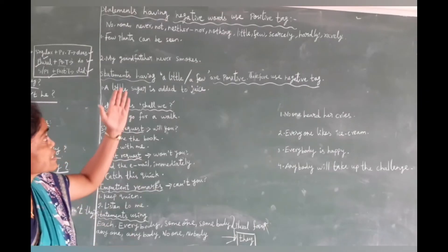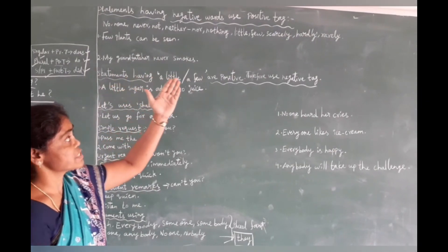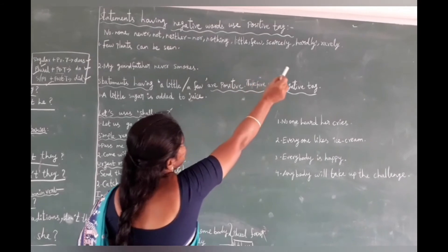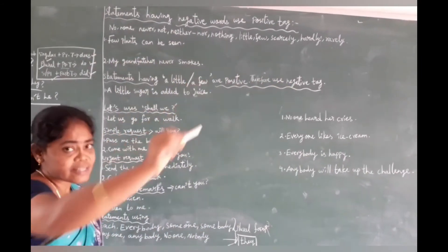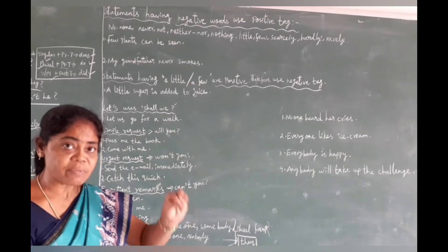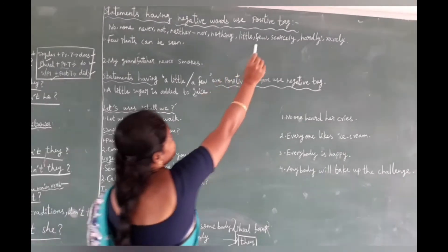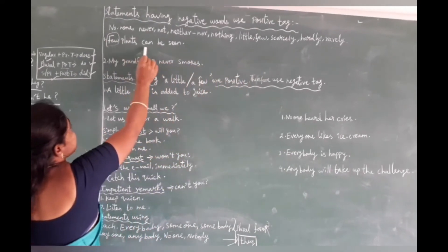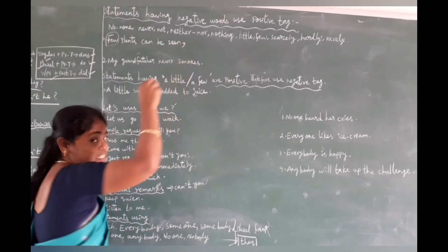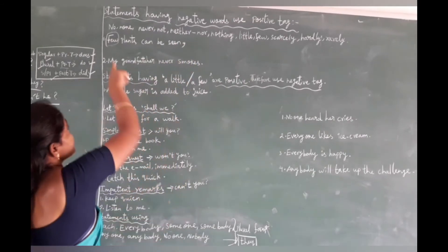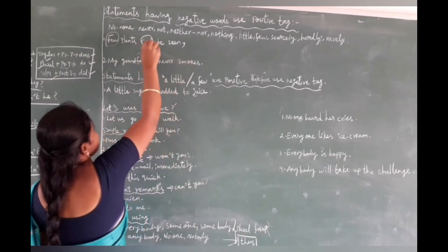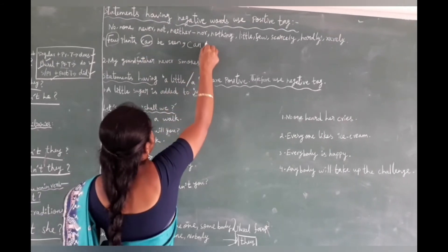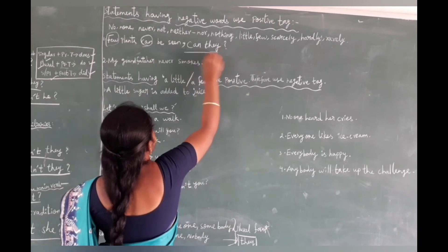Now we will see statements having negative words. These negative words include: no, none, never, neither, nothing, little, few, scarcely, only, rarely. When these words appear in a statement, it takes a positive tag. Example: 'Few plants can be seen.' Here 'few' is the negative word, so the given statement is treated as negative. The auxiliary is 'can', so the positive tag is: 'can they?'